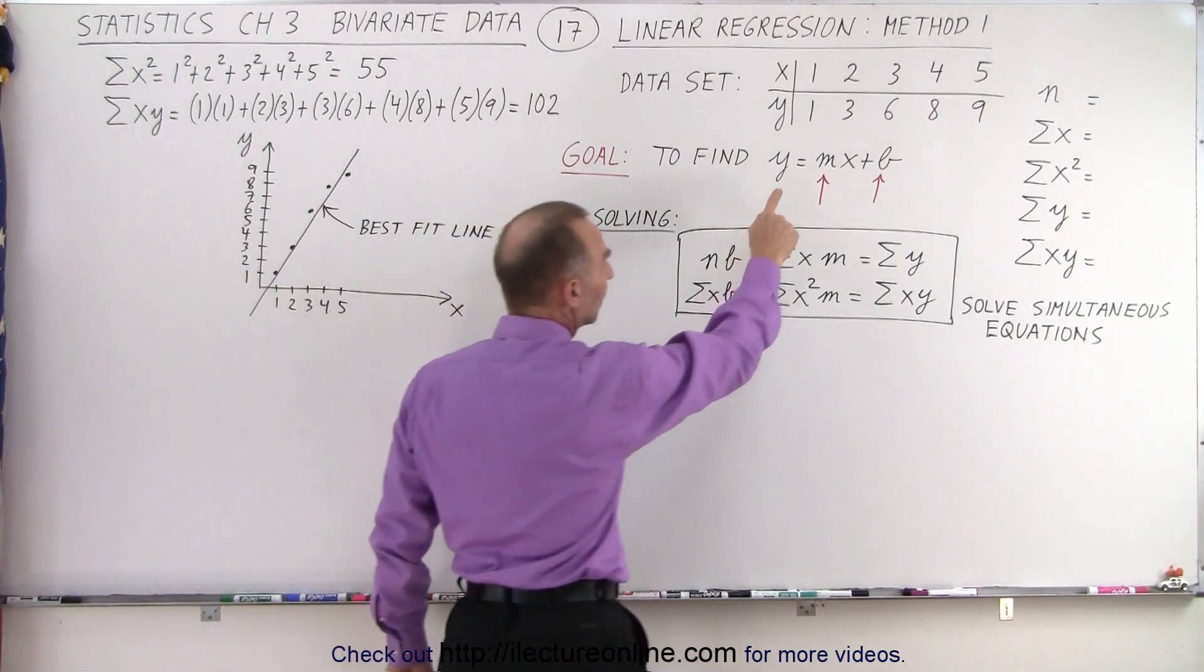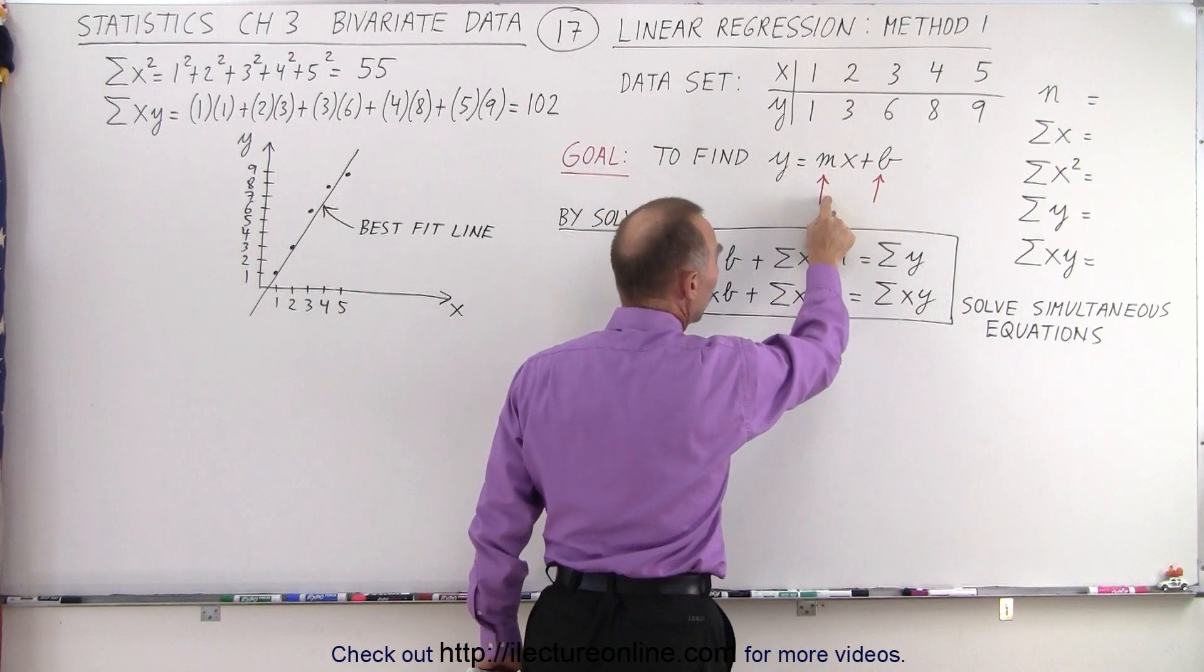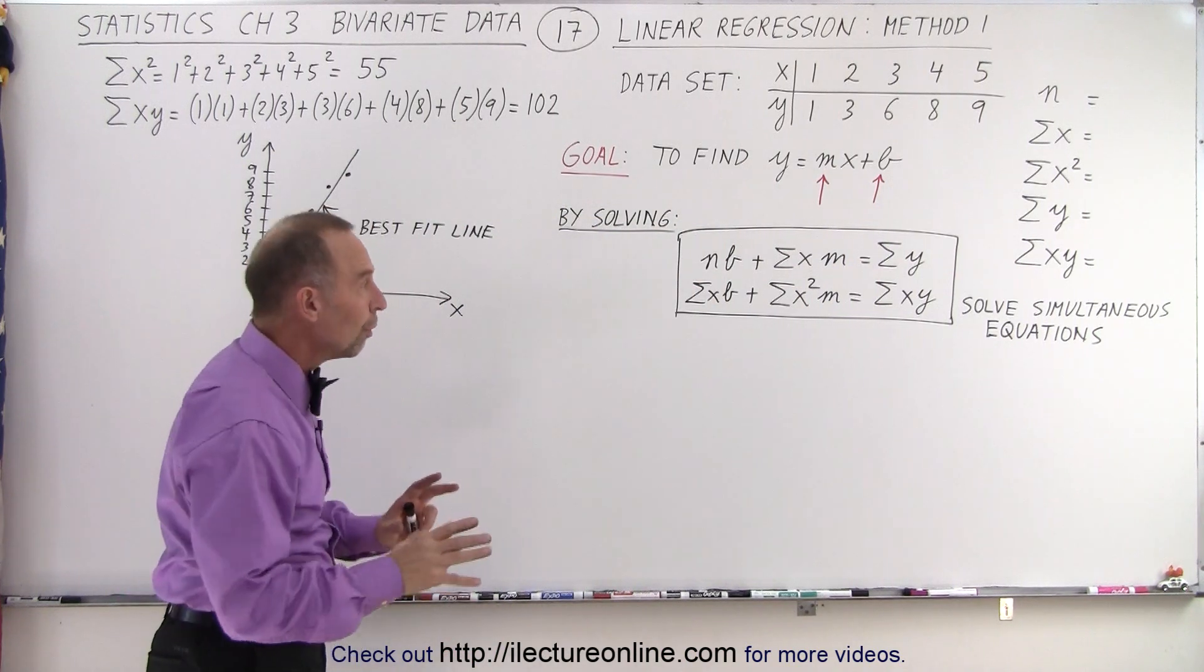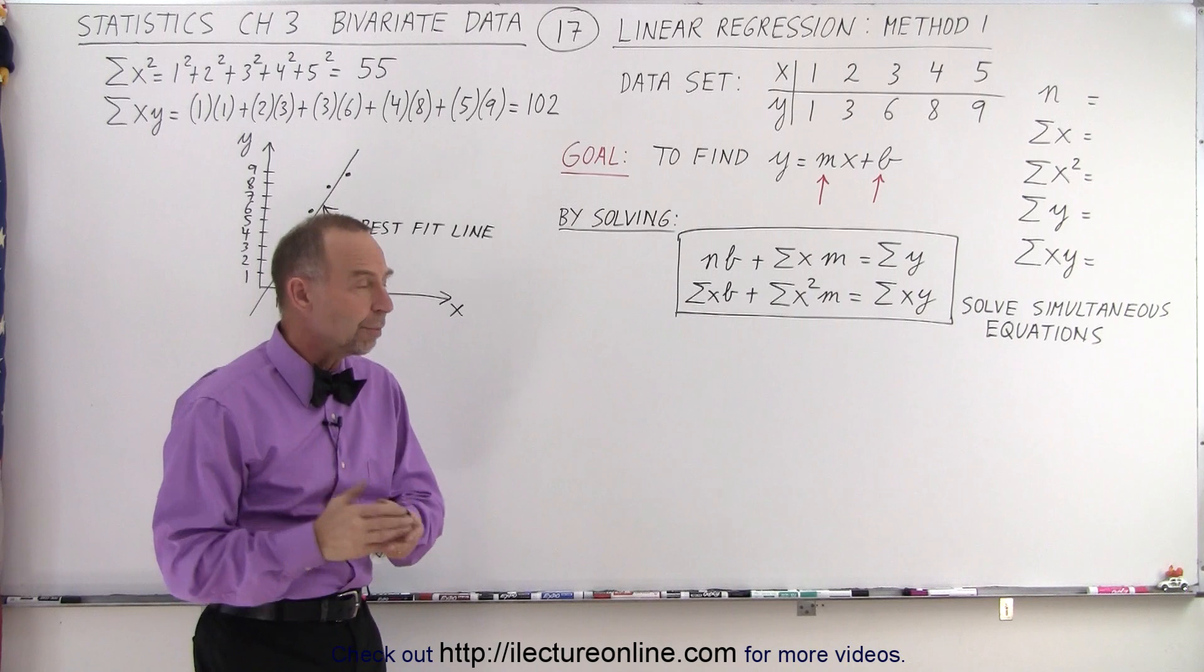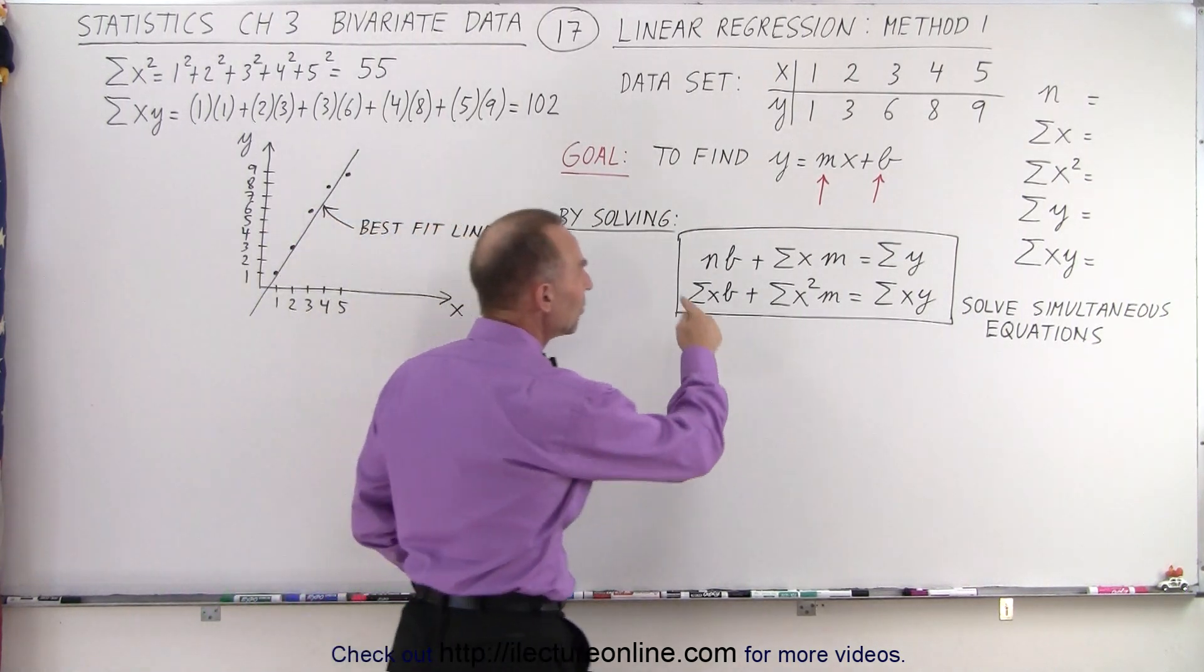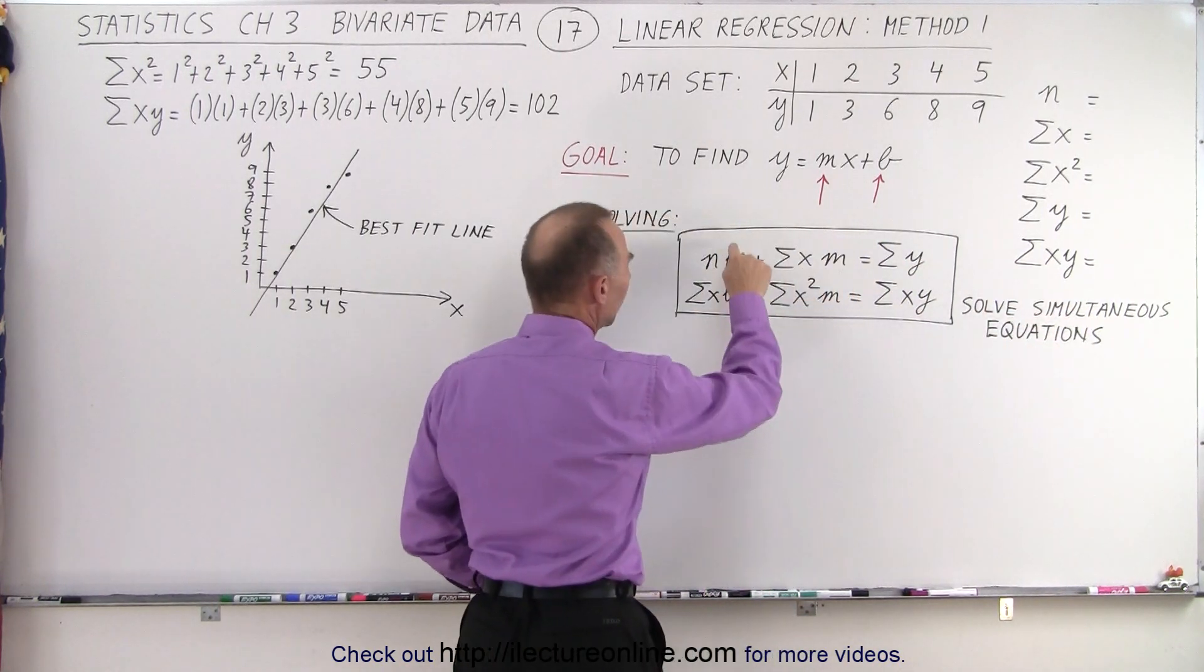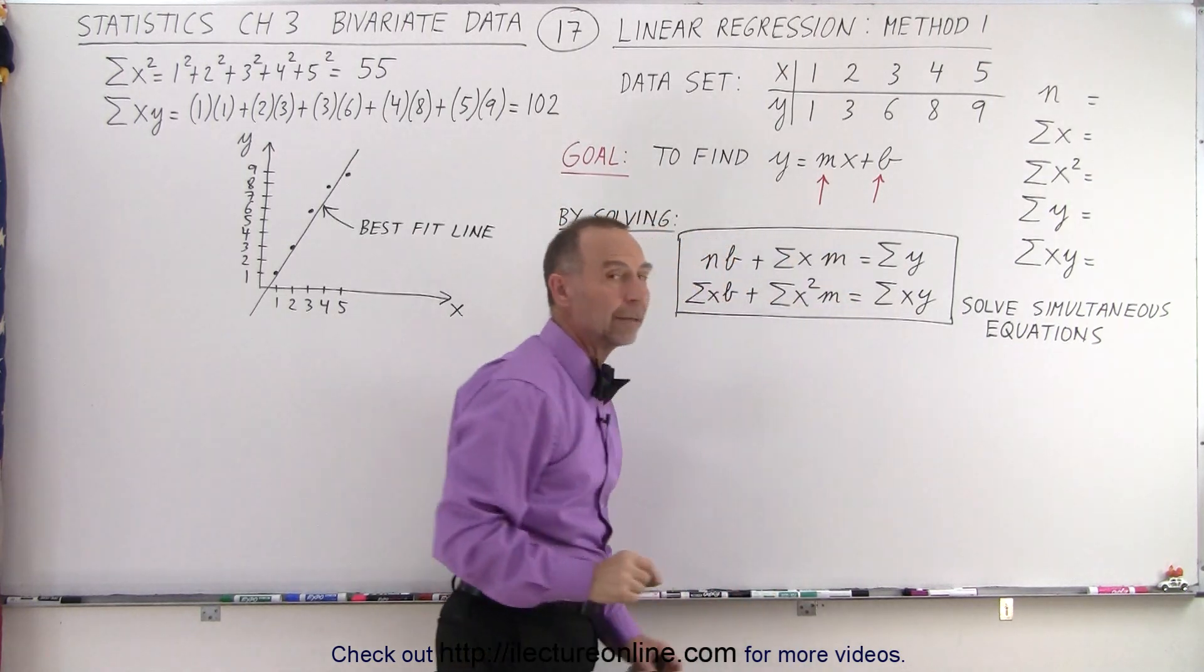We're trying to find the equation of the line y equals mx plus b. In other words, we need to find the slope and we need to find the y-intercept. And we can do so by using this particular method. There's additional methods that we will touch upon, but let's do this one first. This method says that if we take these two equations and solve them simultaneously, you can solve for b and for m, for the y-intercept and for the slope of that particular line.